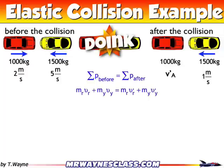So I know in the next line I should have four momentums, because I have four objects in the problem. That's mass of the red times velocity of the red, plus mass of the yellow times velocity of the yellow — that's two momentums before. And then after the collision: mass of the red times velocity of the red, plus mass of the yellow times velocity of the yellow. Two objects after, so a total of four momentums.